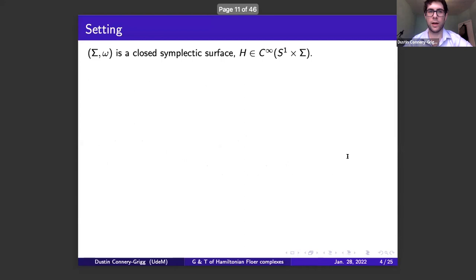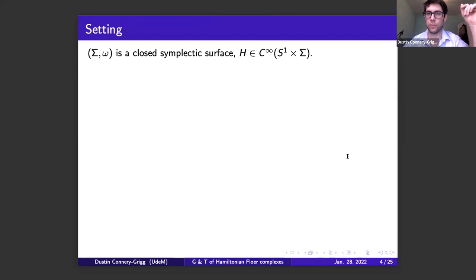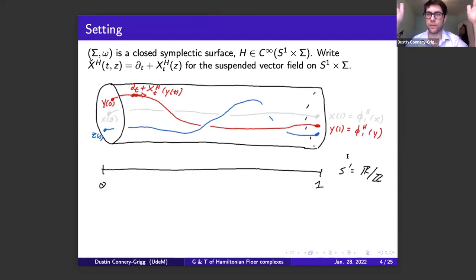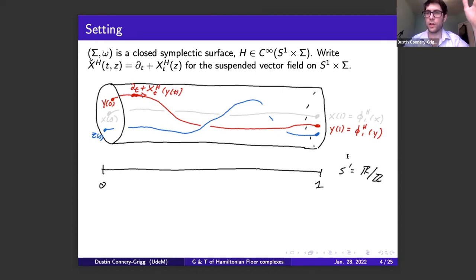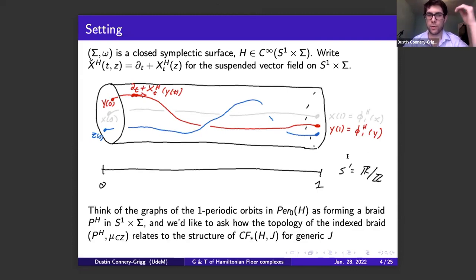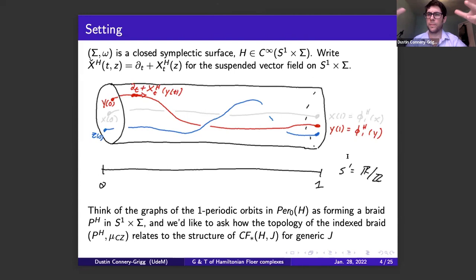The setting I want to consider is a closed symplectic surface — no boundaries. For boundaries, Barney Bramham is the person to consult. I have a periodic Hamiltonian and we consider the Thurstonian picture: we suspend things to the mapping torus, getting a flow such that the integral curves of the suspended vector field are essentially graphs of orbits of your isotopy. The philosophy is that we think of graphs of one-periodic orbits — those closing up at time one — as forming a braid in the mapping torus, and we want to understand how the topology of this braid, combined with the Conley-Zehnder index (measuring local symplectic rotation), relates to the structure of the Floer complex.